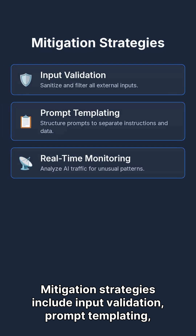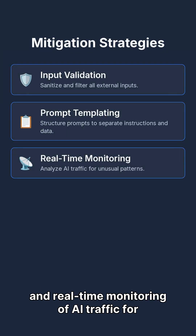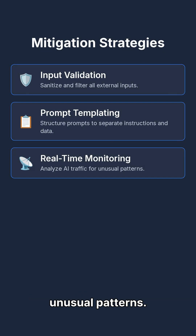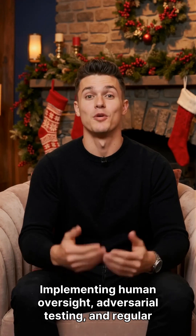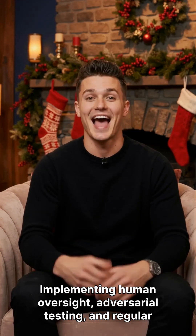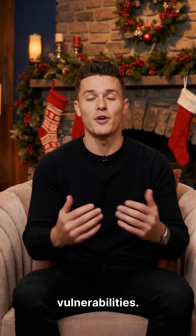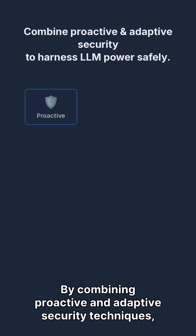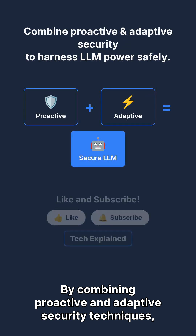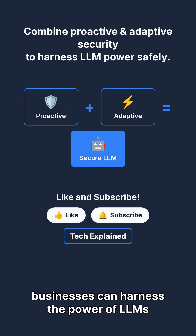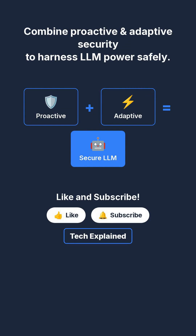Mitigation strategies include input validation, prompt templating, and real-time monitoring of AI traffic for unusual patterns. Implementing human oversight, adversarial testing, and regular LLM testing are also crucial to uncover vulnerabilities. By combining proactive and adaptive security techniques, businesses can harness the power of LLMs while minimizing security risks.